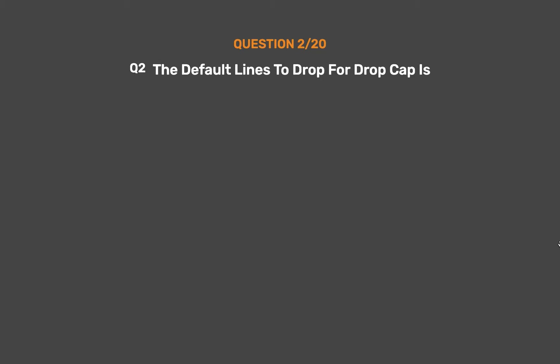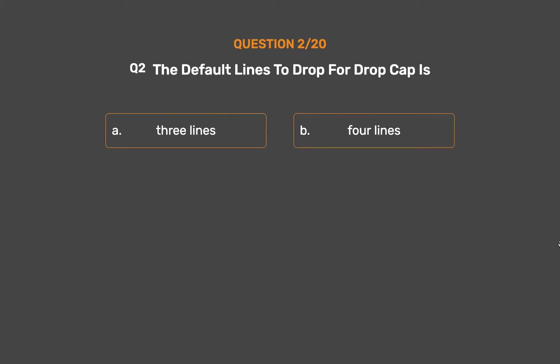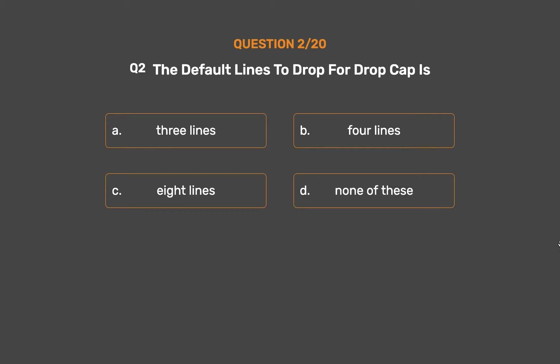Question number 2. The default lines to drop for drop cap is: Option A: 3 lines. Option B: 4 lines. Option C: 8 lines. Option D: None of these.